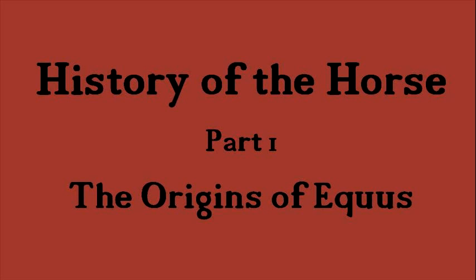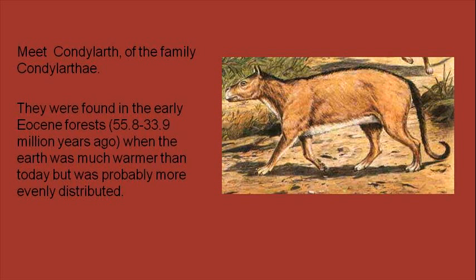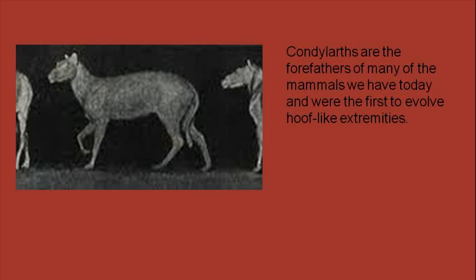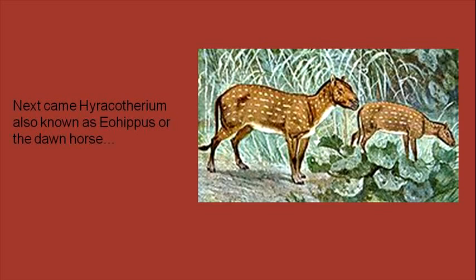History of the Horse, Part 1: The Origins of Equus. Meet the Condylarthra, of the family Condylarthria. They were found in the early Eocene forests, 55 to 33 million years ago, when the earth was much warmer than today, but temperature was probably more evenly distributed. Condylarthras are the forefathers of many of the mammals we have today.